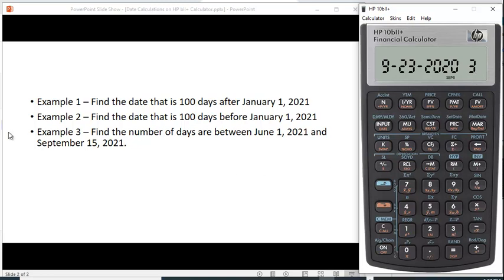And then finally, let's calculate the number of days between two dates. January 1, 2021, and September 15th, 2021. So here we're going to type in 1.01. I'm sorry. Let me redo that.